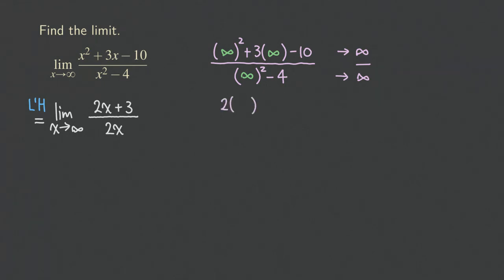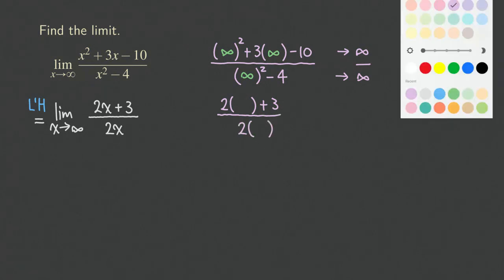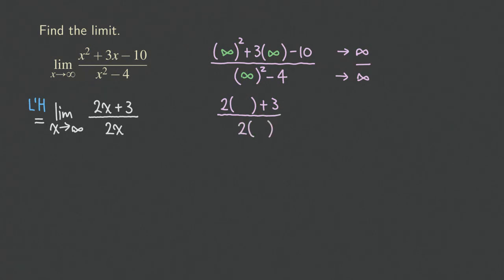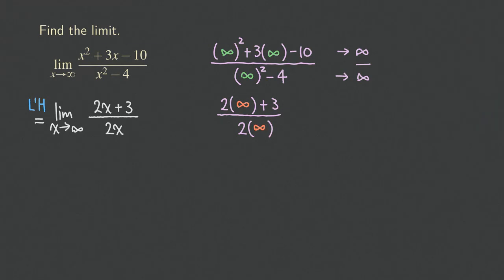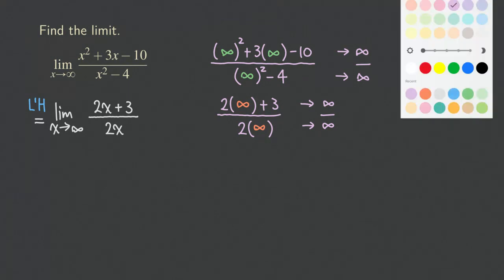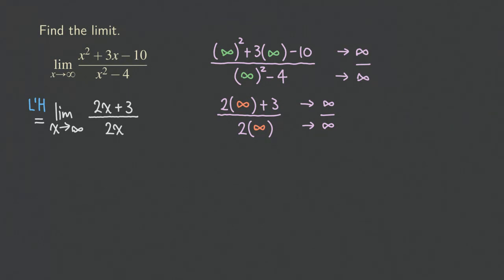Now we do a quick check one more time. The function now has the form (2x + 3) over 2x. As x approaches infinity, the numerator is approaching infinity and the denominator is also approaching infinity. So that's another indeterminate form of infinity over infinity.